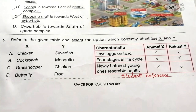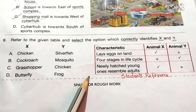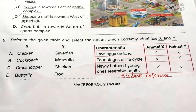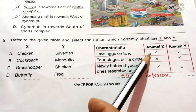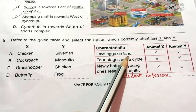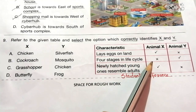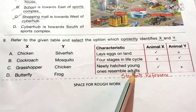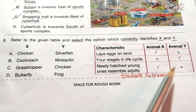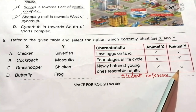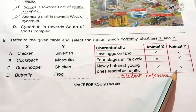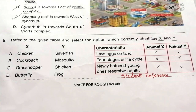Question 9: Refer to the given table and select the option which correctly identifies X and Y. Look at the given table and read the information carefully, then try to find out the answer. The correct answer is B.